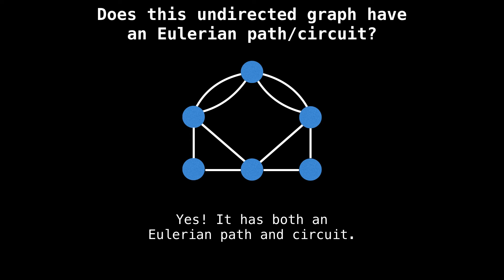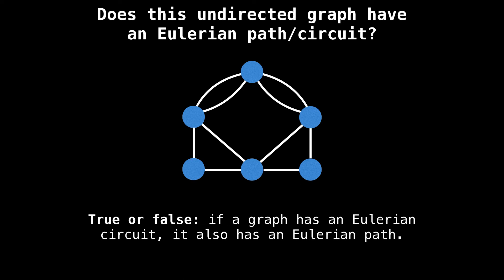What about this graph? This graph has both an Eulerian path and an Eulerian circuit. As a side question, true or false: if a graph has an Eulerian circuit, it also has an Eulerian path. I'll give you a moment to think about it. The answer is true. Any circuit is an Eulerian path.